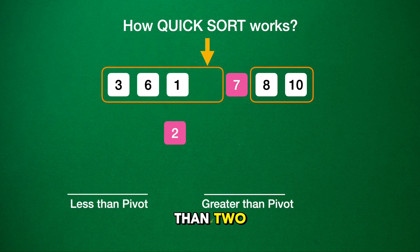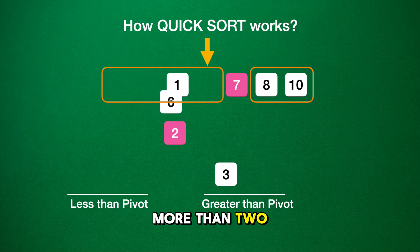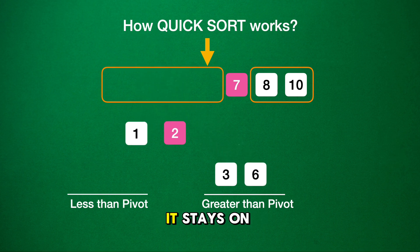3 is more than 2, it goes to the right. 6 is also more than 2, so it joins 3 on the right. 1 is less than 2, it stays on the left.